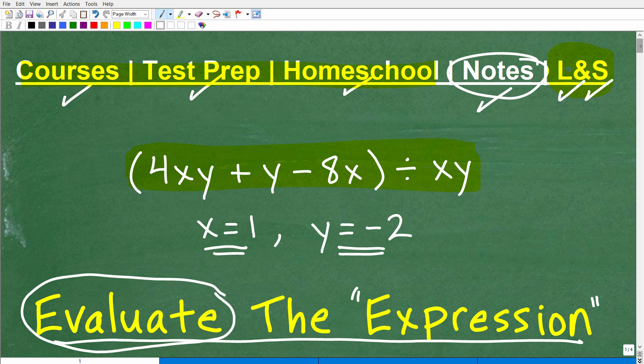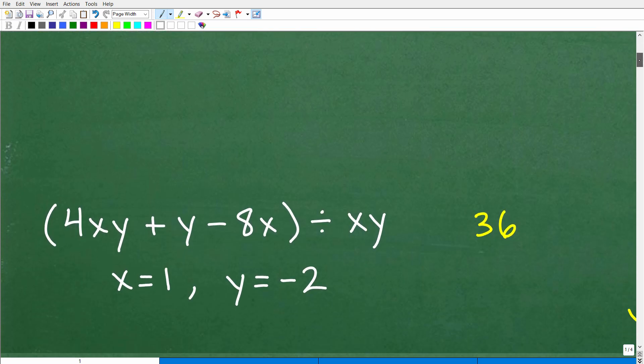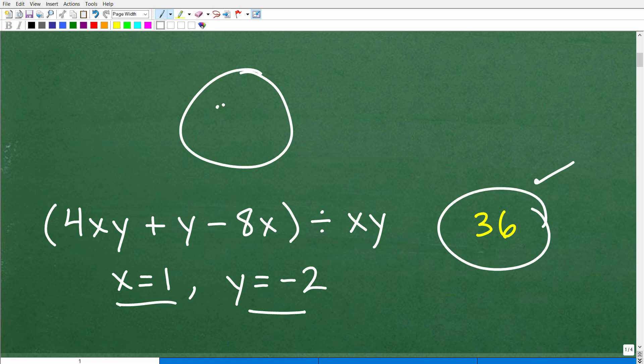Okay, so let's go ahead and take a look at the answer right now. So we have parentheses 4xy plus y minus 8x in parentheses divided by xy. And of course, these variables are x equals 1, y equals negative 2. When we evaluate this expression for these variables, this is the answer 36. So how did you do? Did you get this right? Well, if you got this right, I must give you a nice little happy face and a plus, a 100% and a few stars so you can celebrate your awesomeness in math.